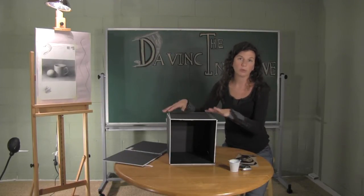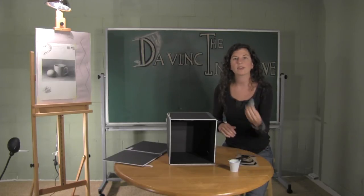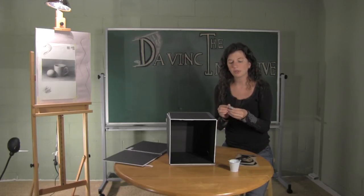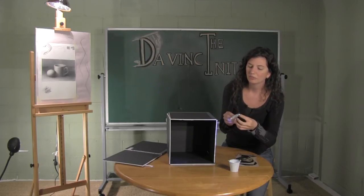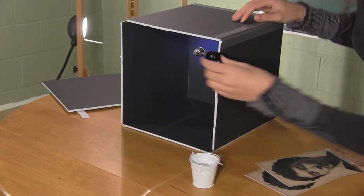For your light source for this setup, I got these clip-on lights from the dollar store that turn on and off. So you can just clip this light to the side of your shadow box here, tilt it to your preference.